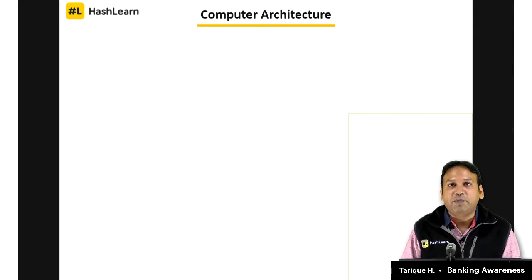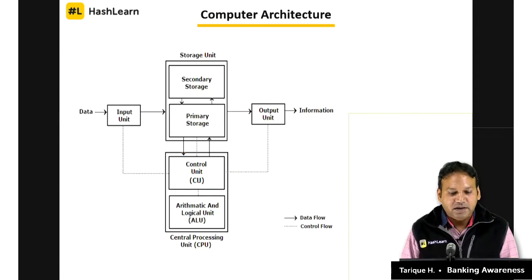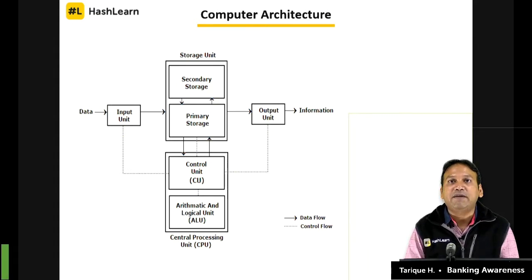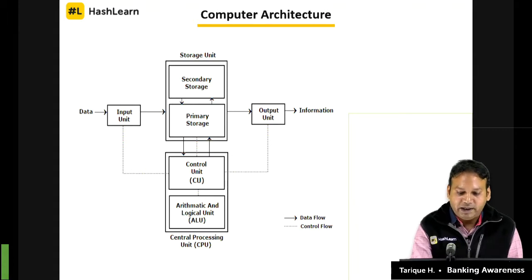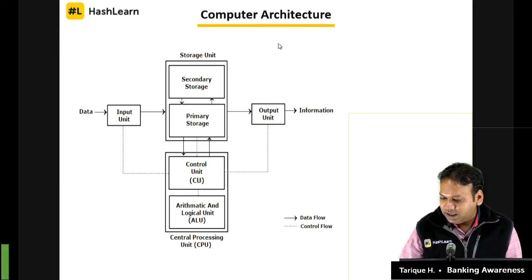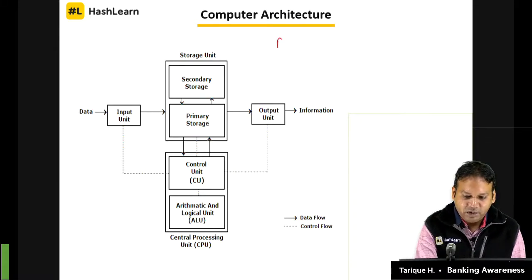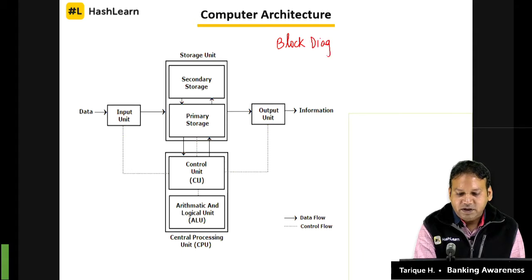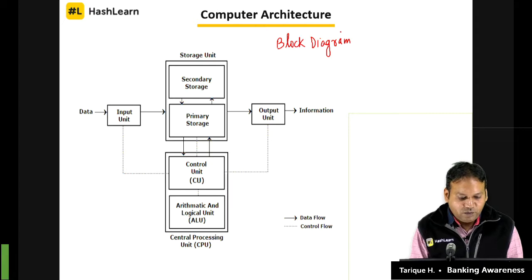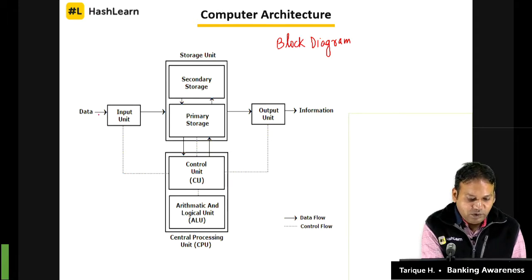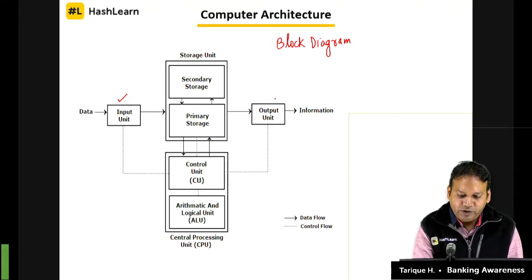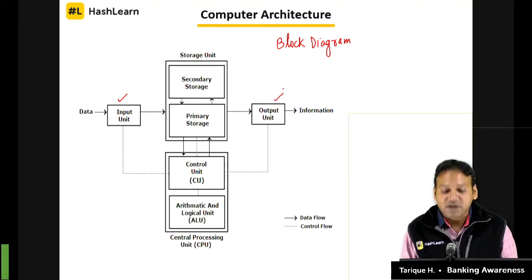Let us start with computer architecture. We are not dealing with advanced concepts — this is the basic block diagram of the computer. We have an input unit through which data comes in, and an output unit where information goes out, and then we have the CPU.